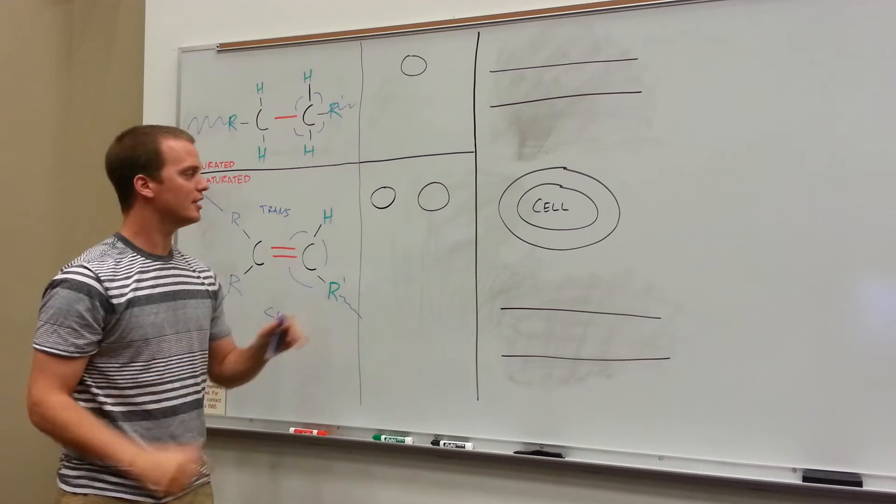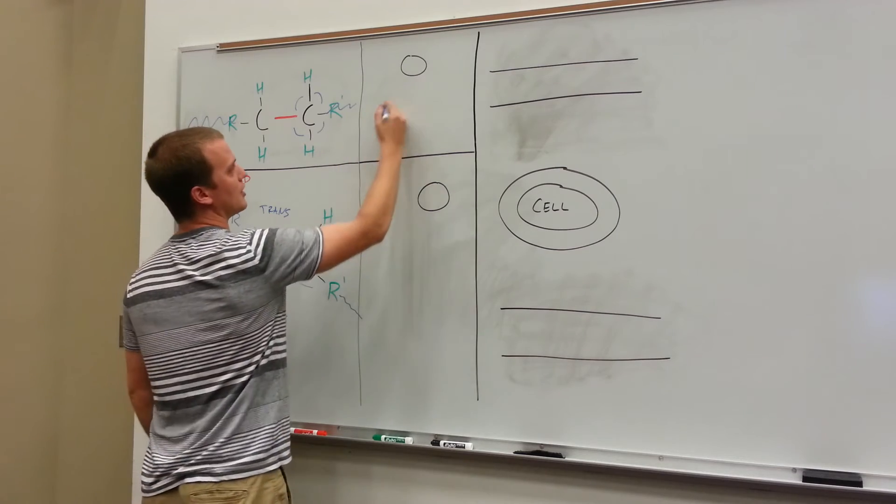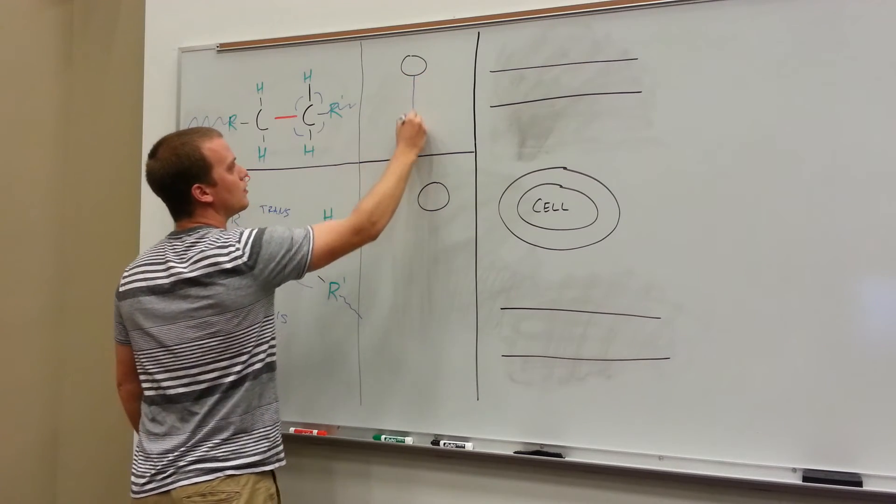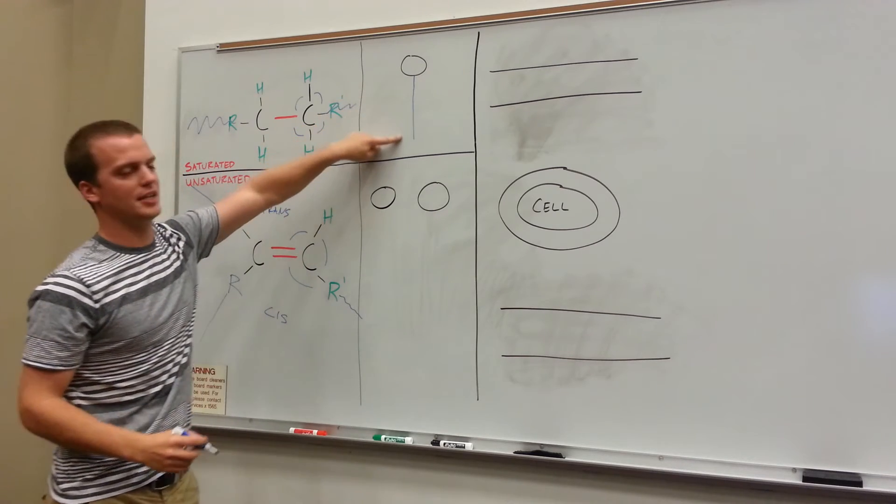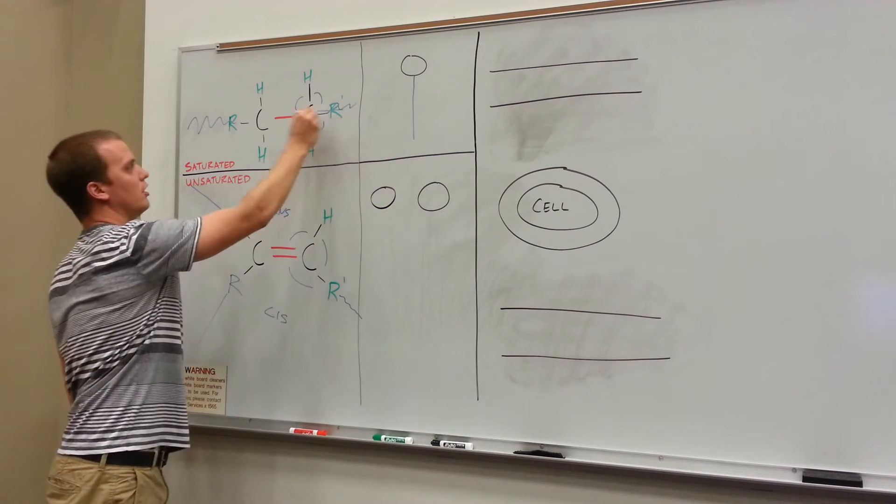And why is this important? This is important because, so we'll draw out what this might look like. As we said, the saturated is going to be very linear. You have a bunch of 90 degree angles. This is what your chain is going to look like. We took this chain all the way through.